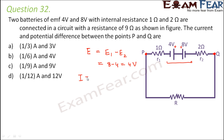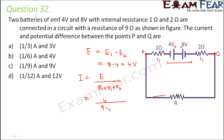The current equals net EMF divided by total resistance. The total resistance is R plus r1 plus r2. The same amount of current flows through all of them since these resistances are connected end to end in series. So the current equals 4 divided by 9 plus 1 plus 2, which is 4 by 12, equal to 1 by 3 ampere. So 1 by 3 ampere is the current flowing through the arm PQ.